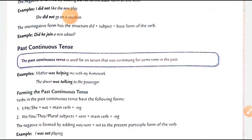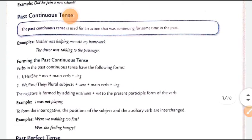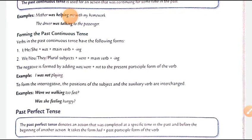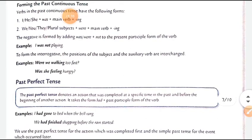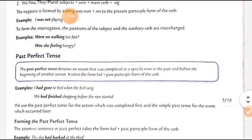Past ki helping verb 'did' hai aur present ki 'do/does' hai — interrogative mein pehle helping verb aati hai. The past continuous tense is used for an action that was continuing for some time in the past. For example: 'Mother was helping me with my homework' — continue tha, lekin past mein tha. 'The driver was talking to the passenger.' Sentence structure: I/he/she + was + main verb + ing. We use 'was' for singular and 'were' for plural.